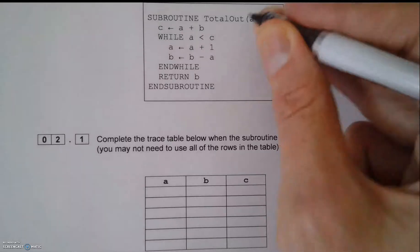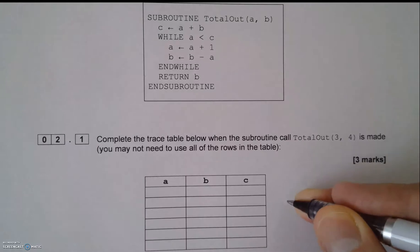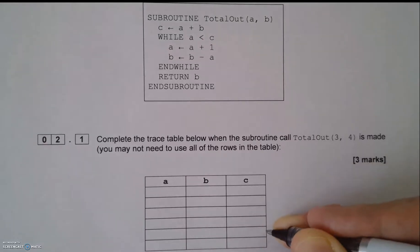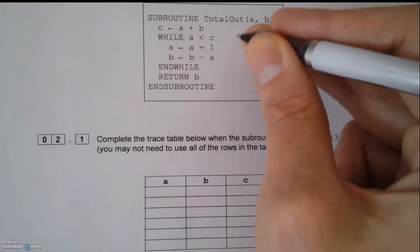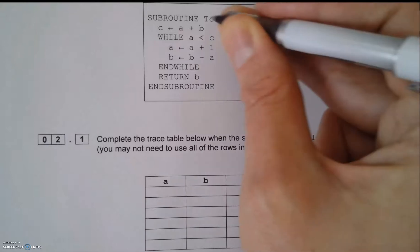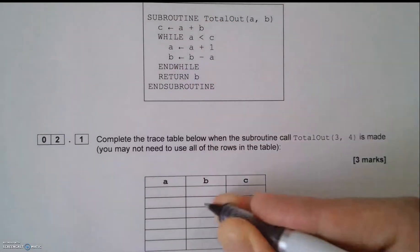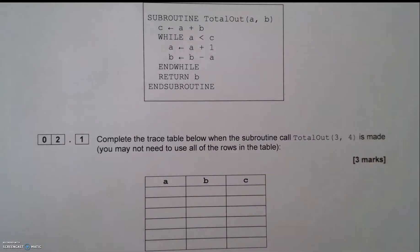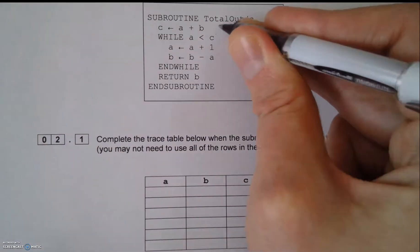What we've got here is another typical exam question involving a trace table. This one is relatively simple. What helps is I've got the algorithm and the subroutine on the same page as where I'm actually writing the values, so I don't have to keep turning the page. Let's just have a look at this for a moment.